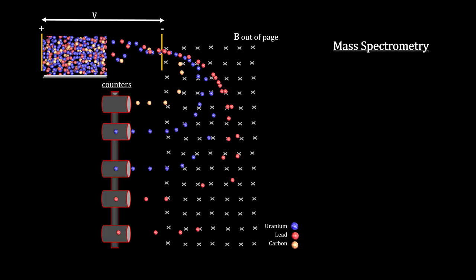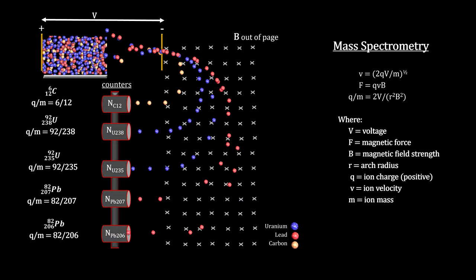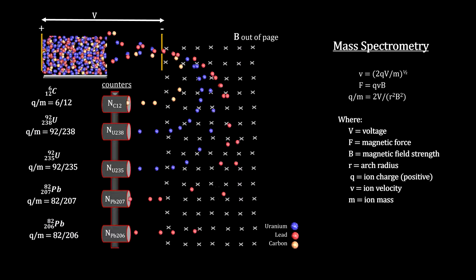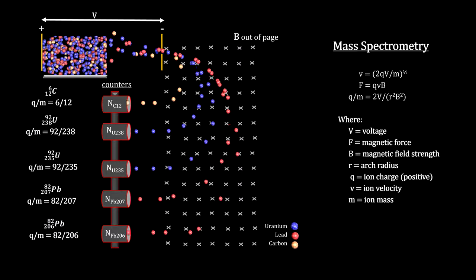The ions will enter into circular curves according to their unique charge-to-mass ratios. This creates multiple streams, with each stream containing the same ions.